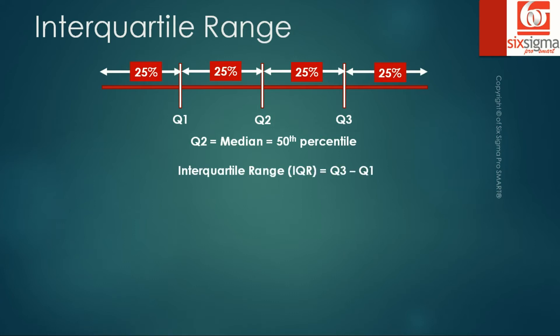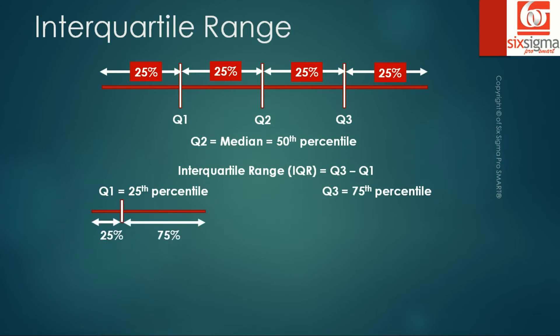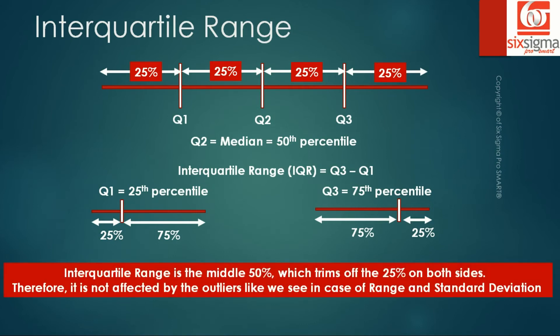Interquartile range by definition is Q3 minus Q1. Q1 is the 25th percentile, and Q3 is the 75th percentile, meaning Q1 has 25% of data points below it and 75% above it, while Q3 has 75% of points below it. Therefore, IQR represents the middle 50%, trimming off 25% on both sides, so it is not affected by outliers like range and standard deviation are. This is why interquartile range is considered a better measure of spread when outliers are present in the data.